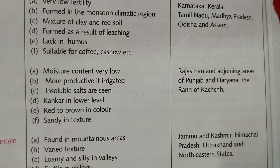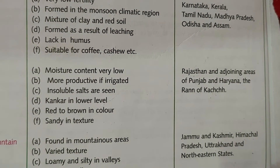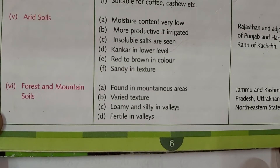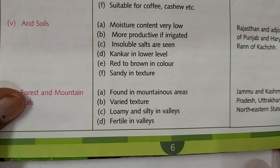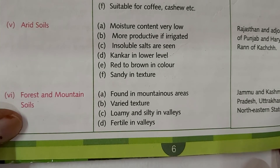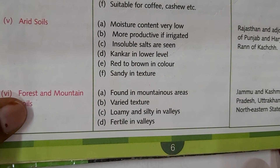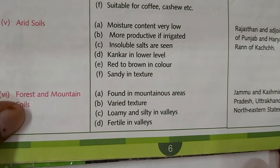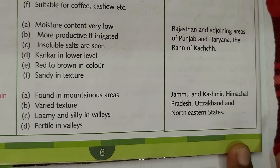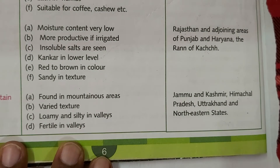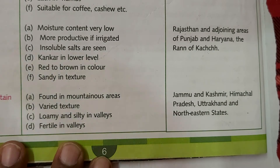The last soil type is forest and mountain soil. These are found in mountainous areas with varied texture — loamy and silty in valleys, where they are fertile due to river sediment deposition. Jammu and Kashmir, Uttarakhand, Himachal Pradesh, and other northern states are the areas where this soil is found.